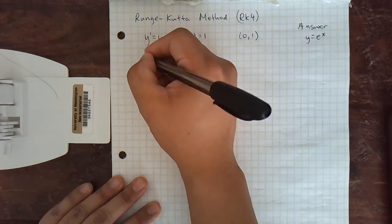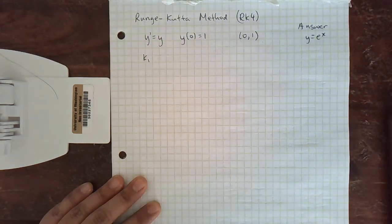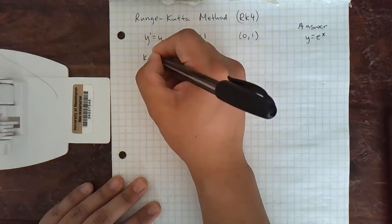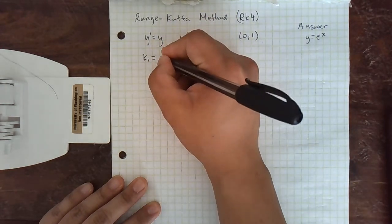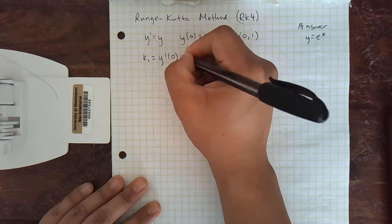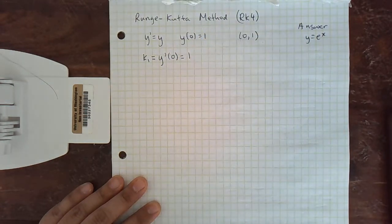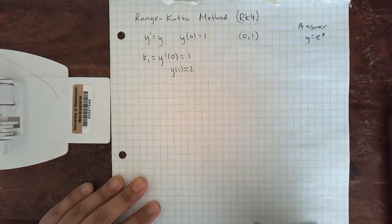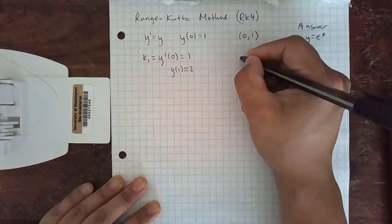And then we start calculating our slopes. We're going to call them k1, k2, k3, and k4. So k1 is just like the normal Euler method. We're going to look at y' of 0, which is 1. And remember, this gave us a y of 1 that was approximately 2. So we got to the point.